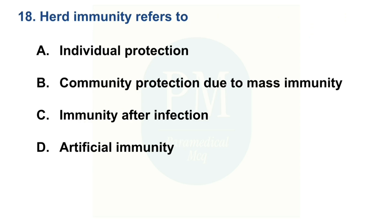Herd immunity refers to — Option A: individual protection. Option B: community protection due to mass immunity. Option C: immunity after infection. Option D: artificial immunity. The correct option is Option B: community protection due to mass immunity.